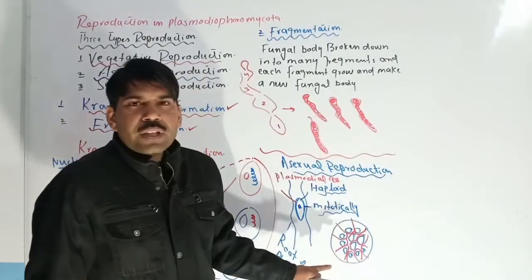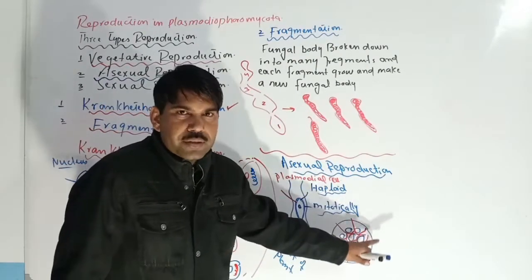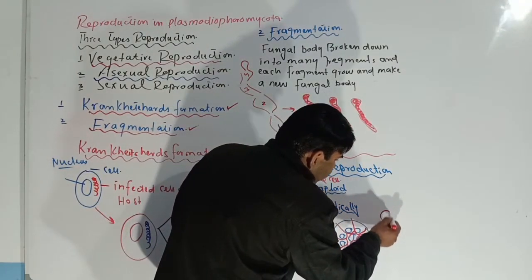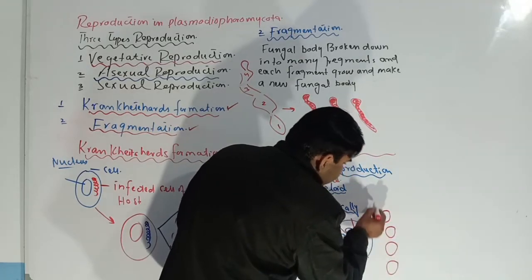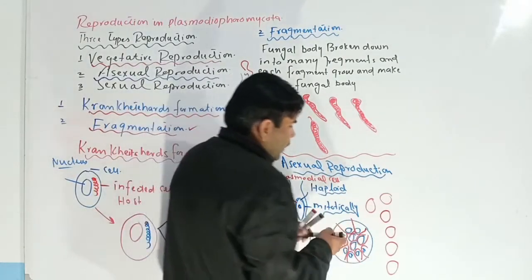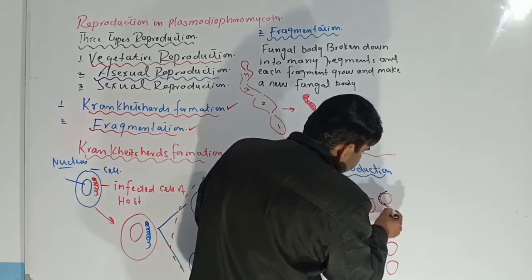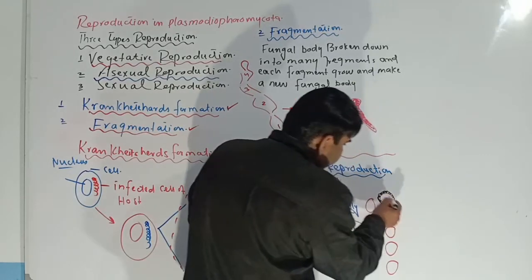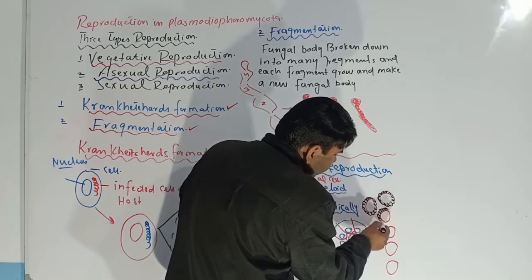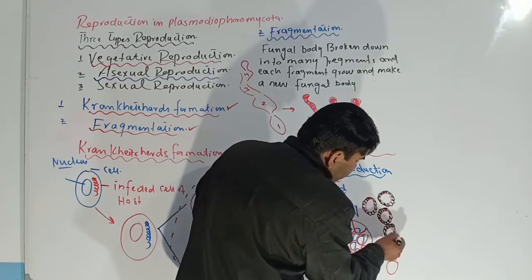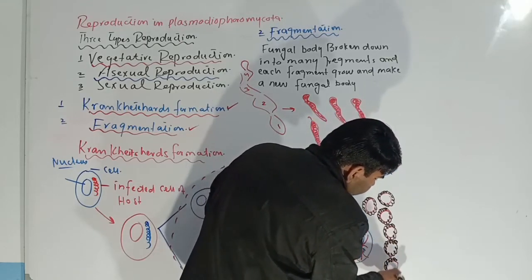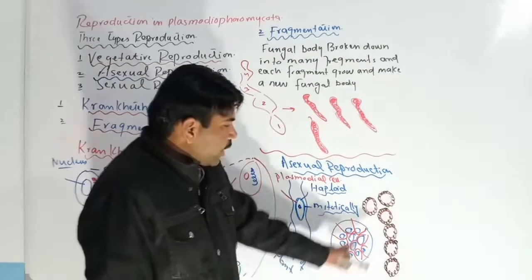Each nucleus is separated. When the plasmodial cell bursts, the nuclei come out from the cell. These nuclei secrete a thick wall around themselves. With the thick wall formed around each nucleus, these structures are now known as spores.